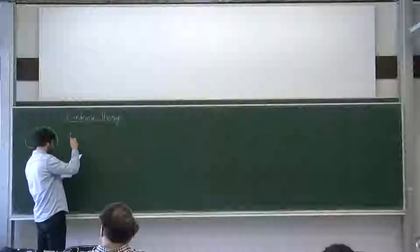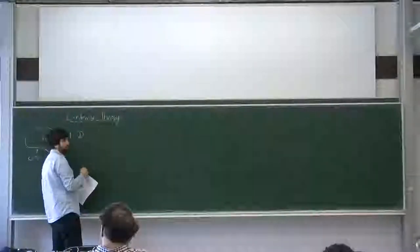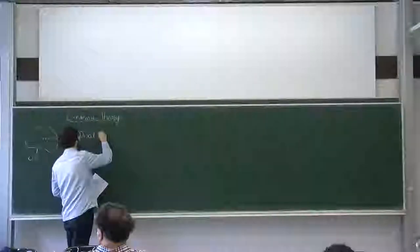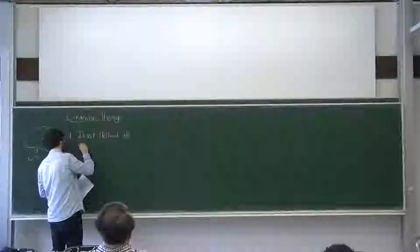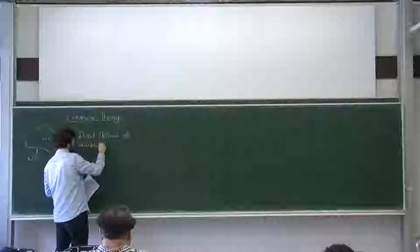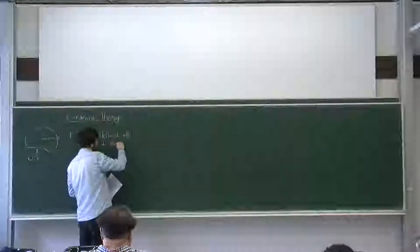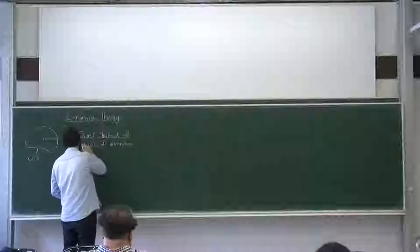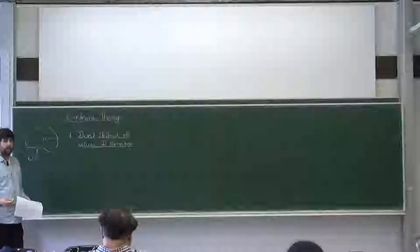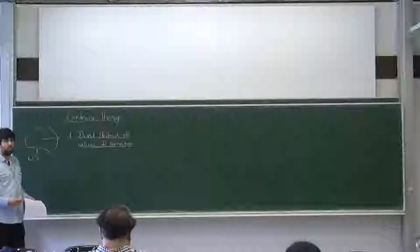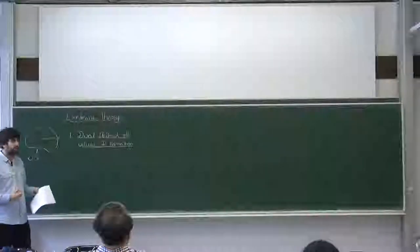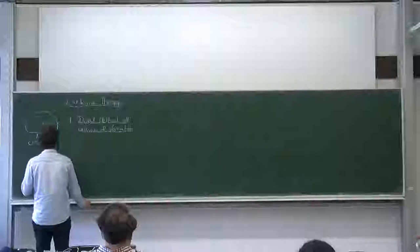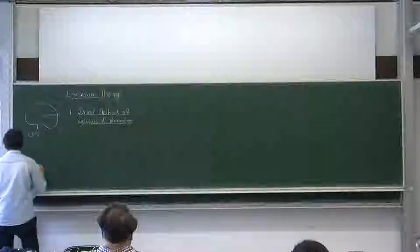The first part of the talk is called the direct method, because this is what one uses — the direct method of the calculus of variations. So basically there are three steps.